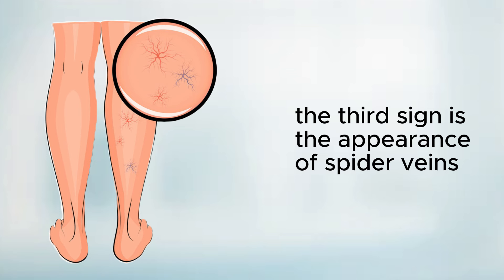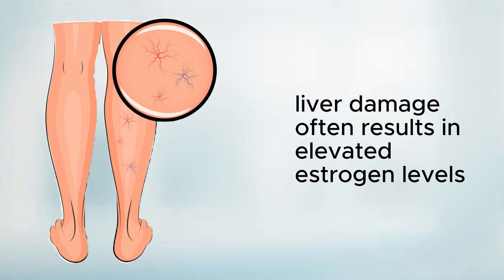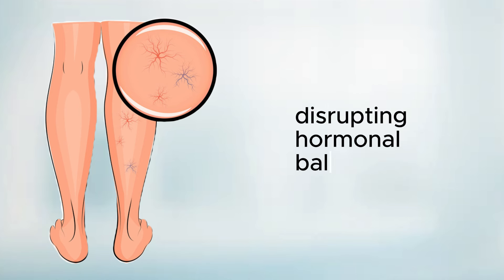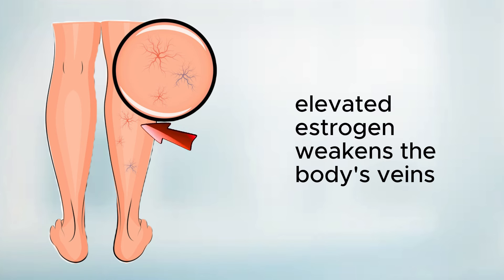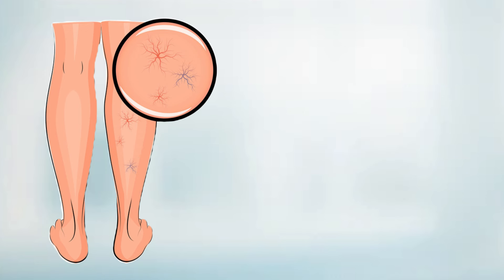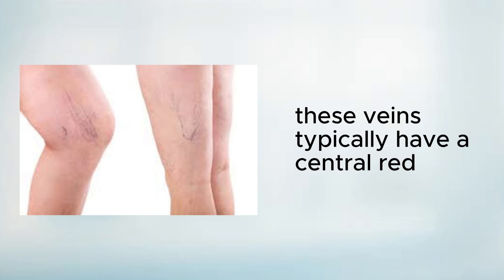The third sign is the appearance of spider veins. Liver damage often results in elevated estrogen levels, as the liver struggles to process excess hormones, disrupting hormonal balance. Elevated estrogen weakens the body's veins, leading to the development of small spider veins on the skin surface. These veins typically have a central red with reddish extensions radiating from it.